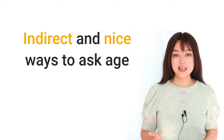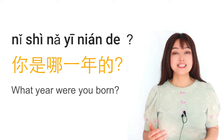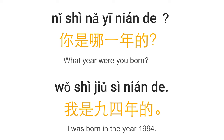We've learned the direct ways to ask for age. But in real life, asking age is a sensitive topic, so you must know the indirect ways. You can ask 你是哪一年的? meaning 'what year were you born?' Then you calculate the age. For example: 我是九四年的 — I was born in 1994, so you know this person is 29 this year.